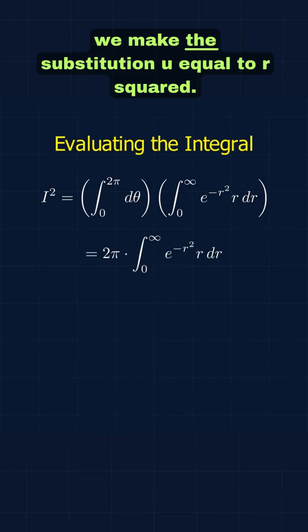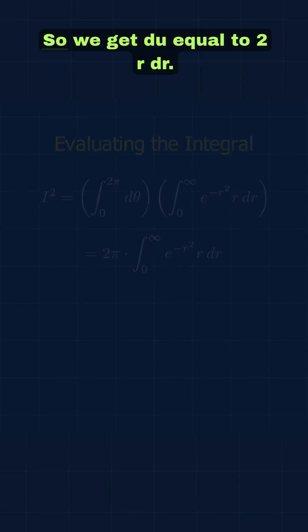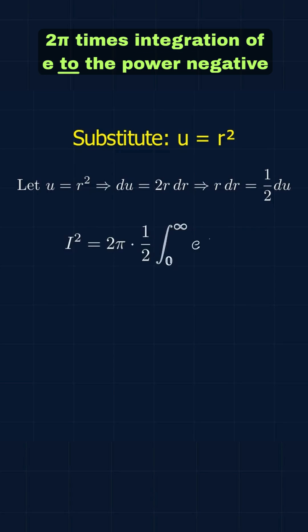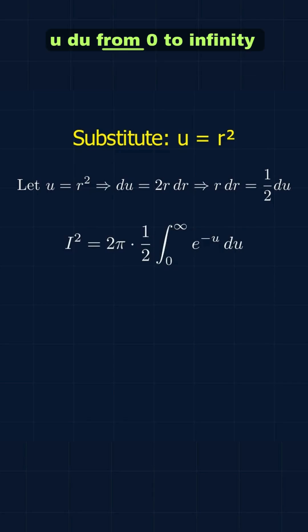Now to further integrate, we make the substitution u equal to r squared. So we get du equal to 2 r dr. We end up with I squared equal to 2 pi times integration of e to the power negative u du from 0 to infinity.